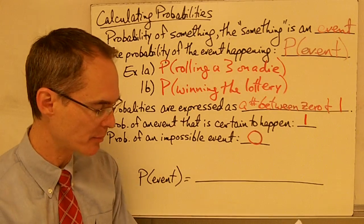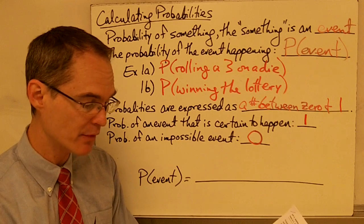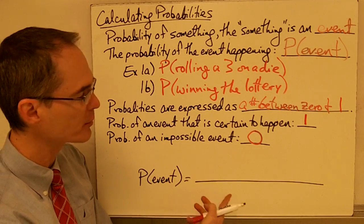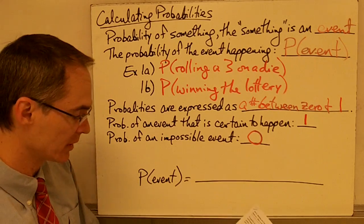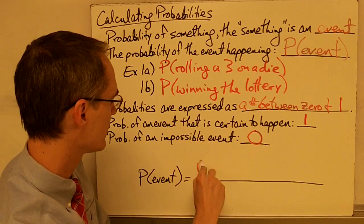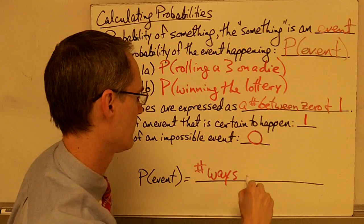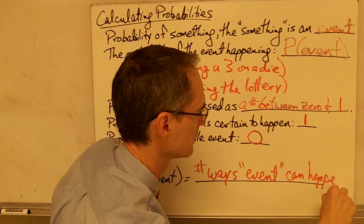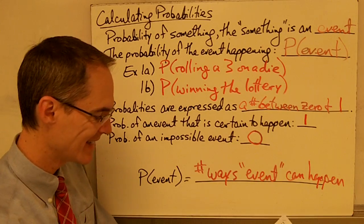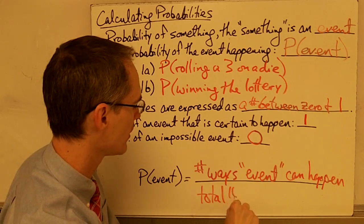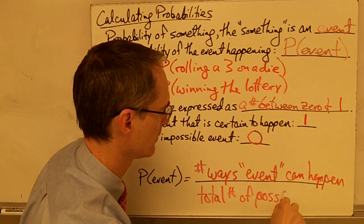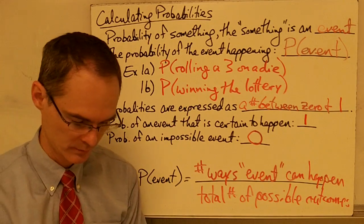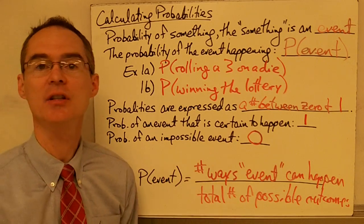When you want to calculate a probability, you count the number of ways an event can happen and divide that number by the total number of possible outcomes. That gives us a formula: the probability of an event equals the number of ways the event can happen divided by the total number of possible outcomes. Let's take a look at how we go about calculating some of these probabilities.